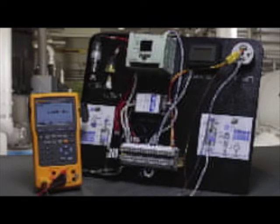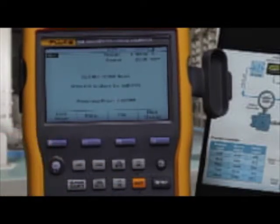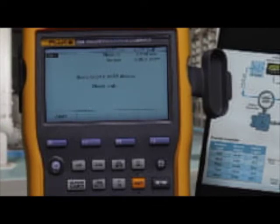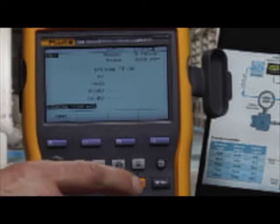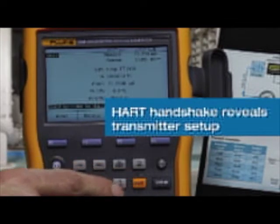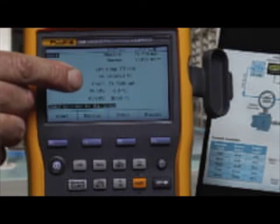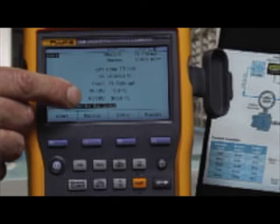To initiate the test, we would select HART and turn on loop power. In the initial handshake with the transmitter, we see the tag of the transmitter, its PV, and its input range.